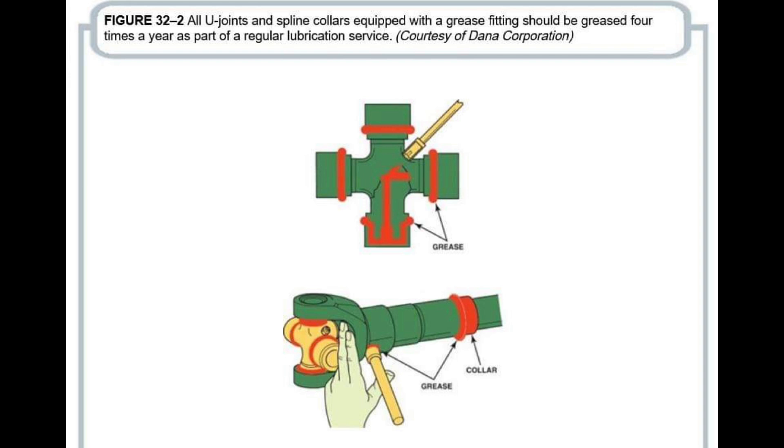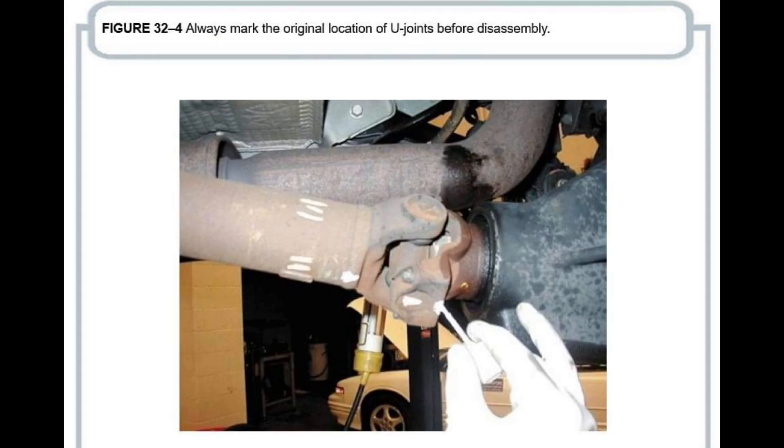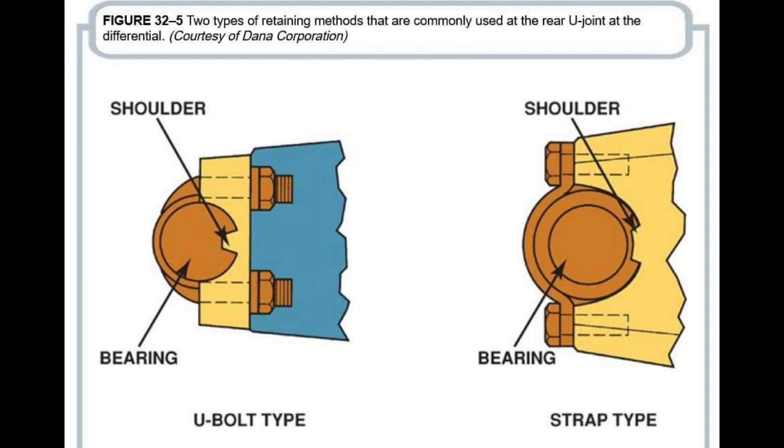U-joint (universal joint): A U-joint is a mechanical coupling used to transmit rotational motion between shafts that are at different angles to each other. It consists of a pair of hinges connected by a cross-shaped pivot, allowing for flexibility in the transmission of torque.